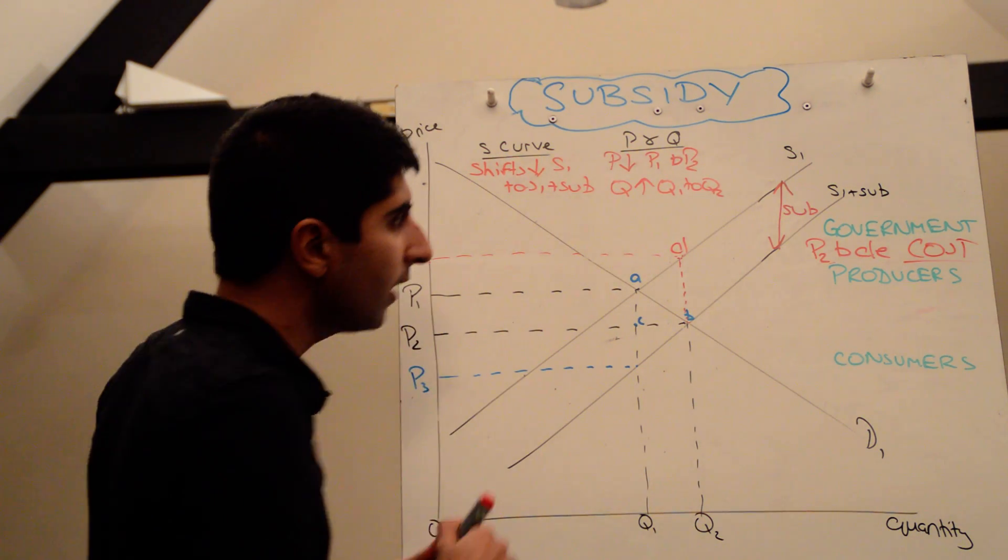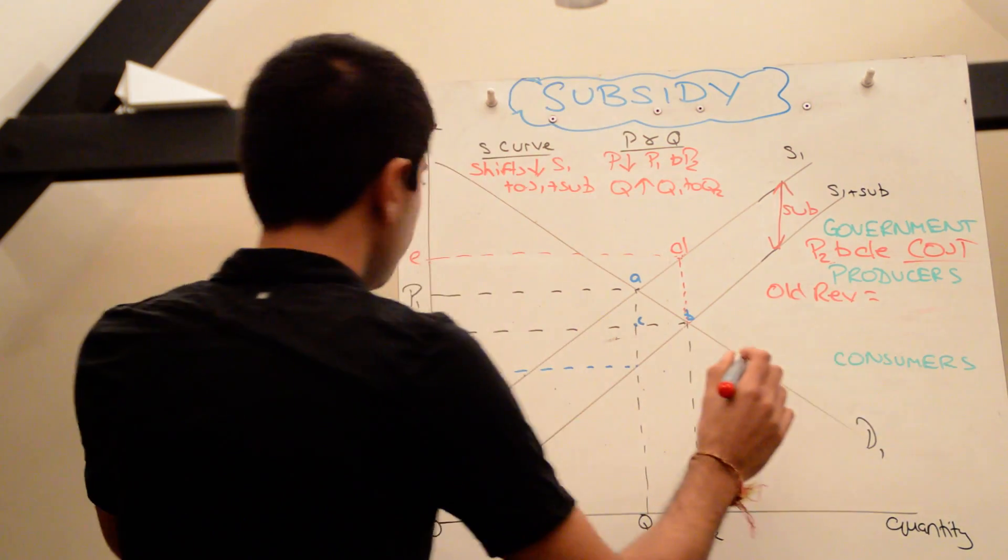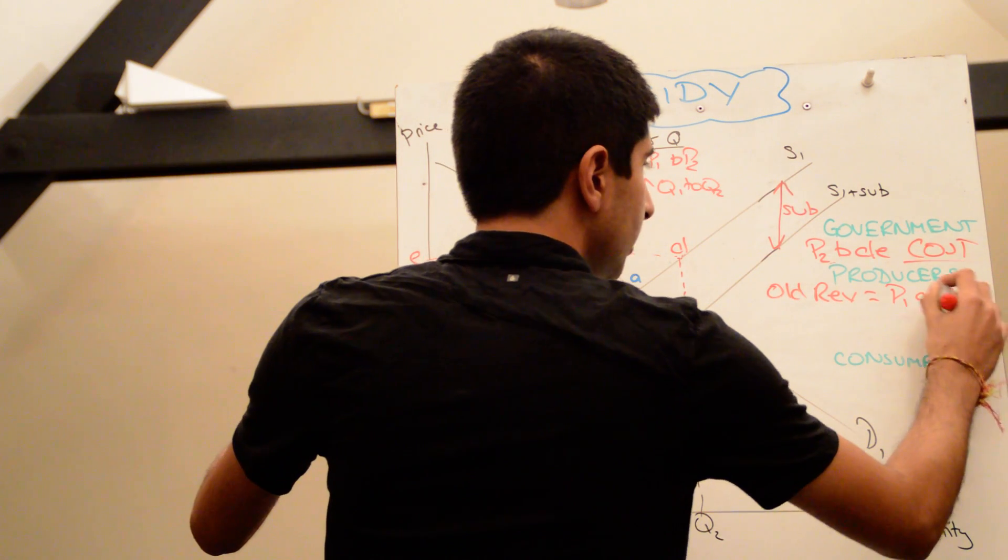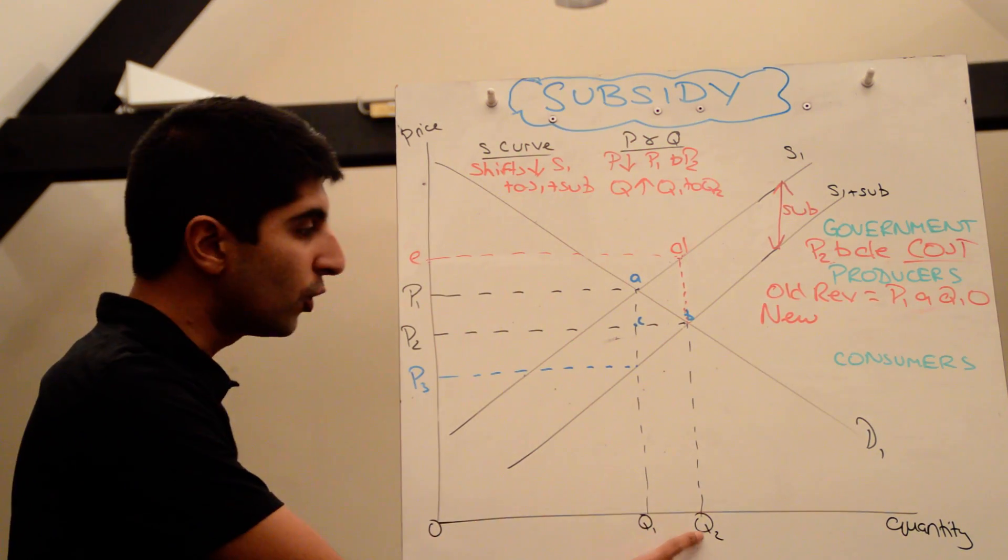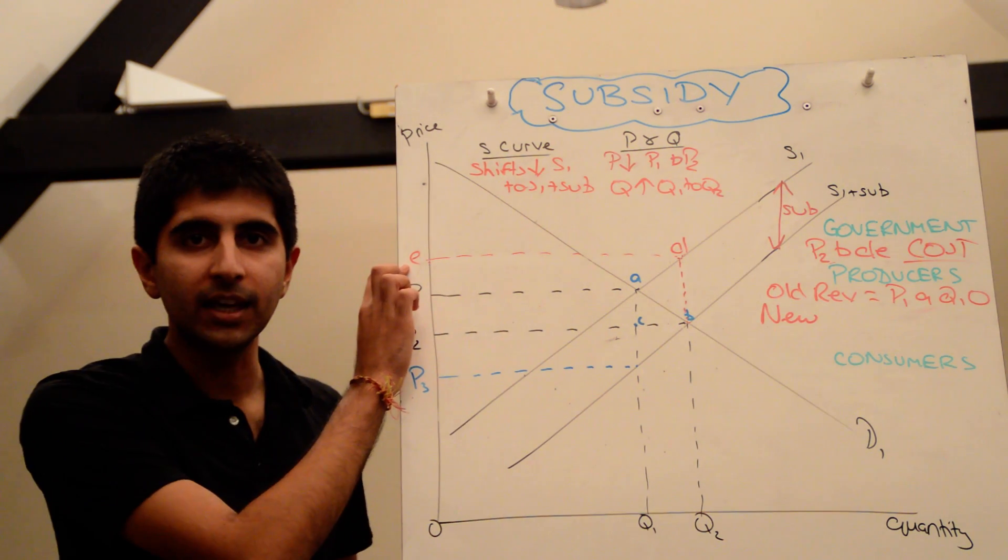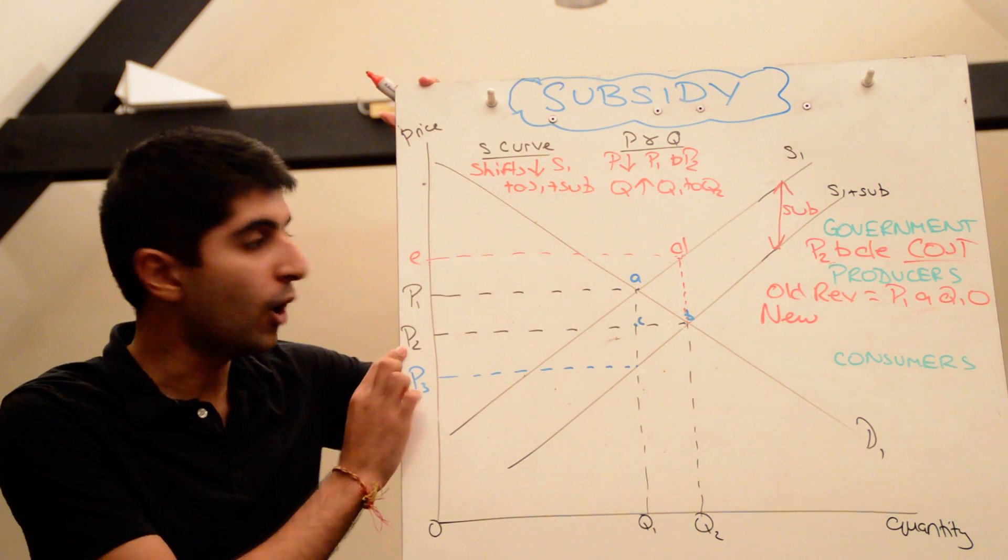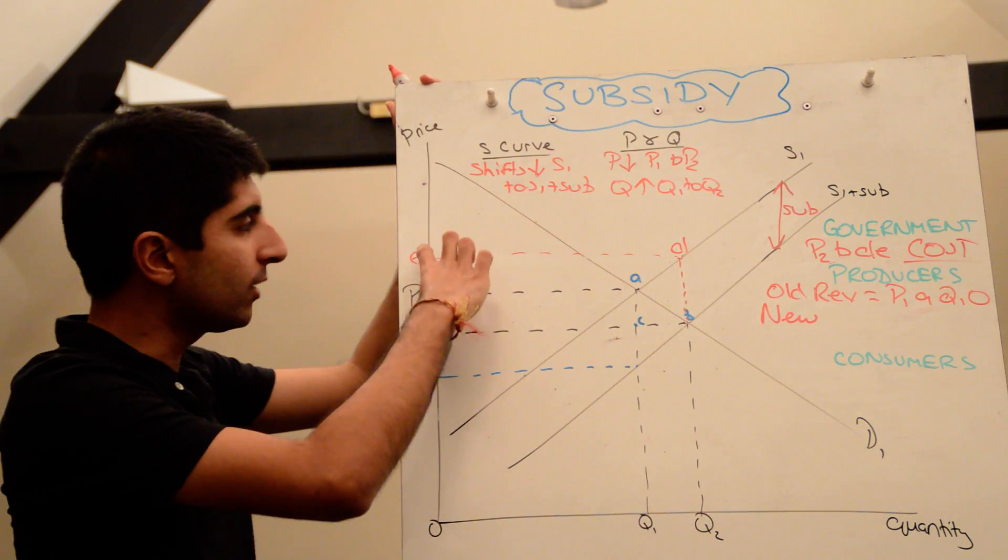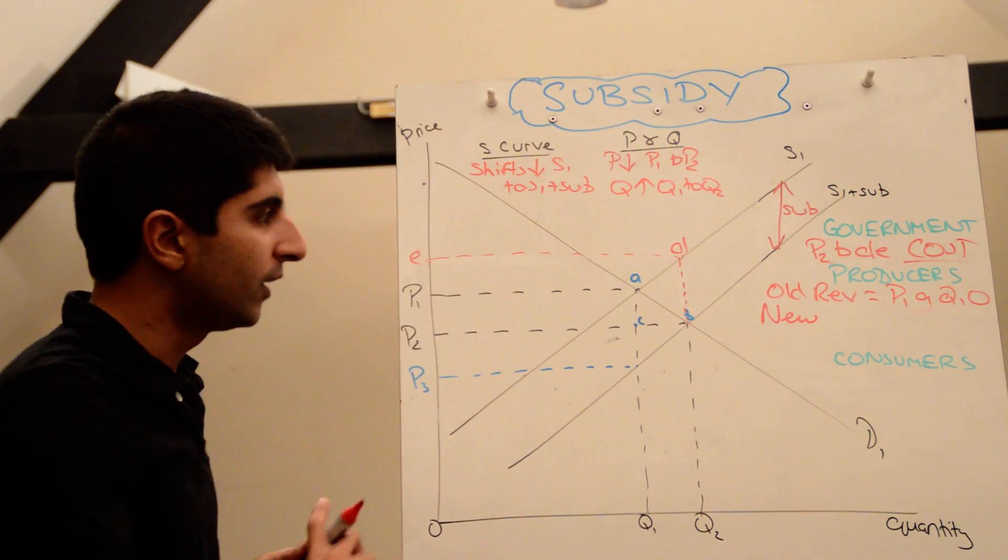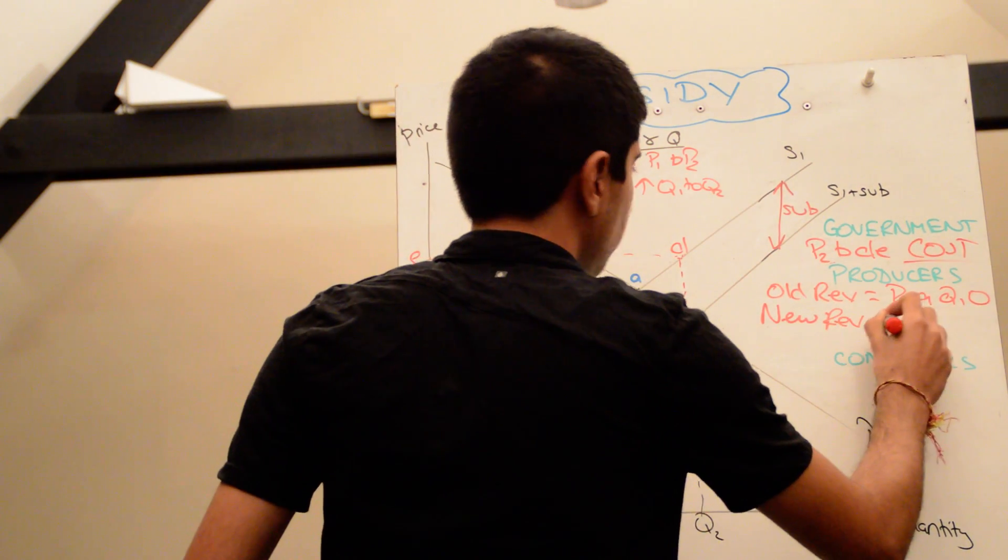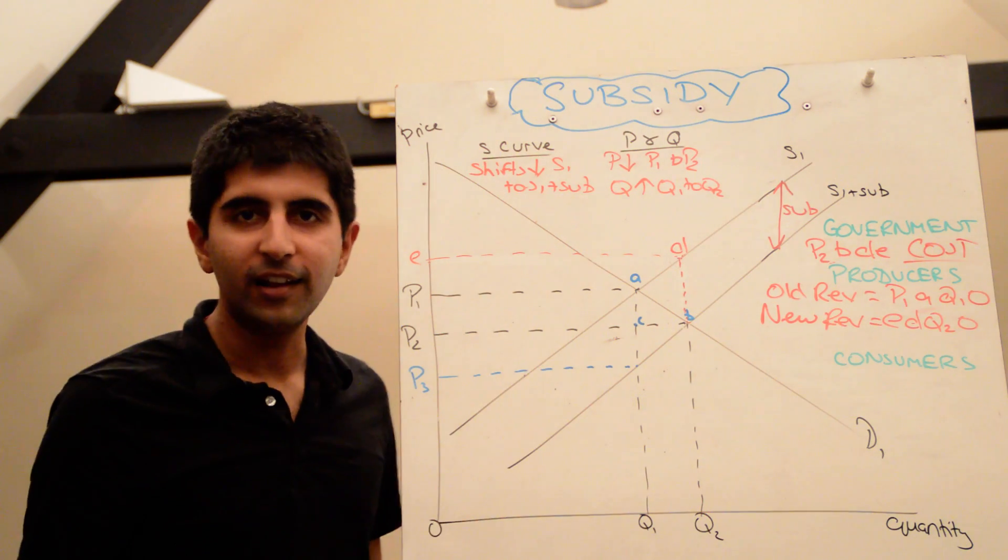So if we can isolate these impacts, we can look at old revenue was equal to P1, A, Q1 and 0. That was that old revenue. But now their new revenue. Their new revenue is what? They're selling Q2, but actually the price they're getting is equivalent to E. Because they are getting the subsidy as well. So even though, in truth, they're charging consumers P2. On top of that, they're getting a subsidy, which is equal, in terms of value, to E and P2. So really the price they're actually getting is E. So their new revenue is actually equal to E, D, Q2, 0. Producers absolutely adore that. Lucky them.